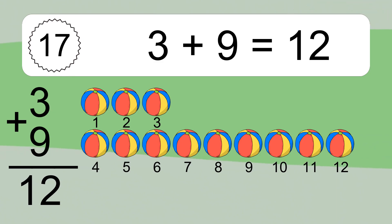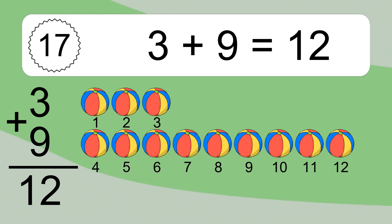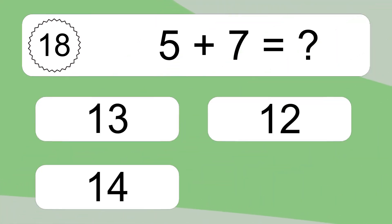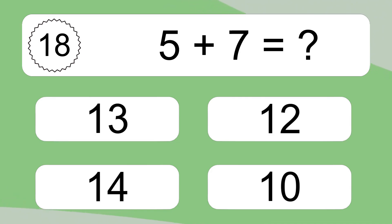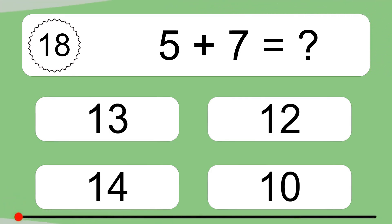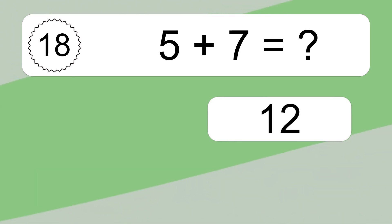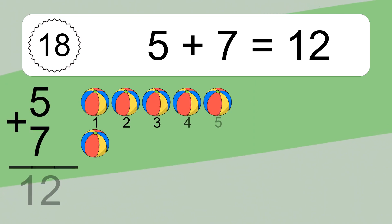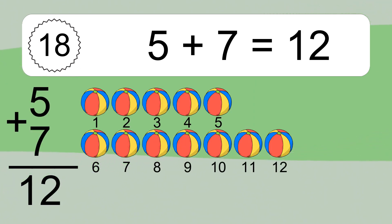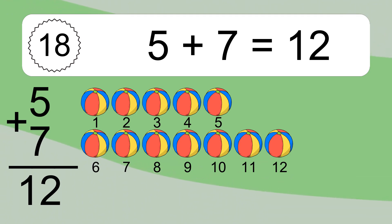5 plus 7 equals what? 5 plus 7 equals 12. Let's count it: 1, 2, 3, 4, 5, 6, 7, 8, 9, 10, 11, 12.